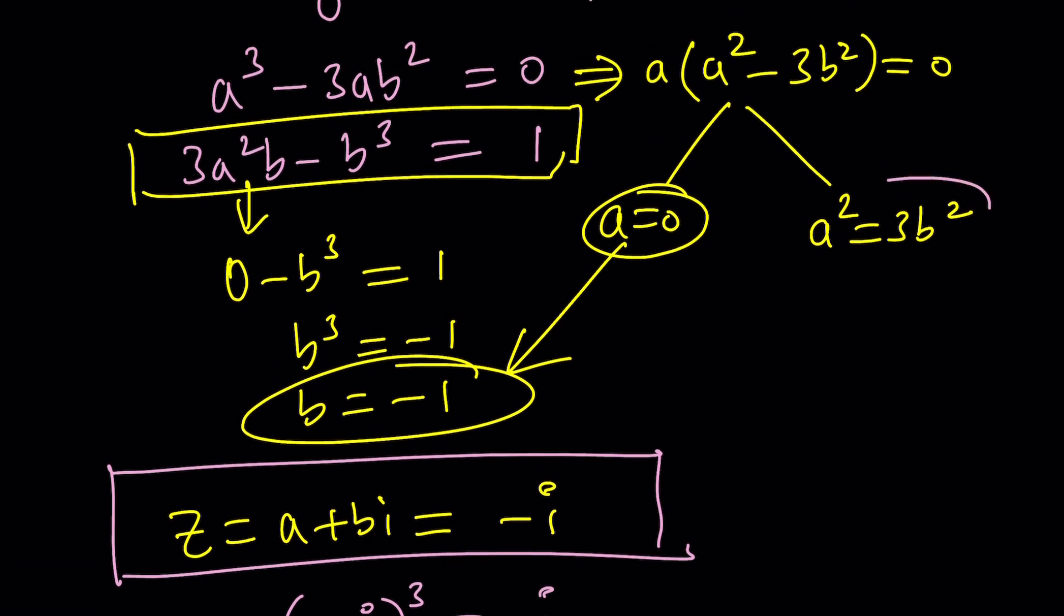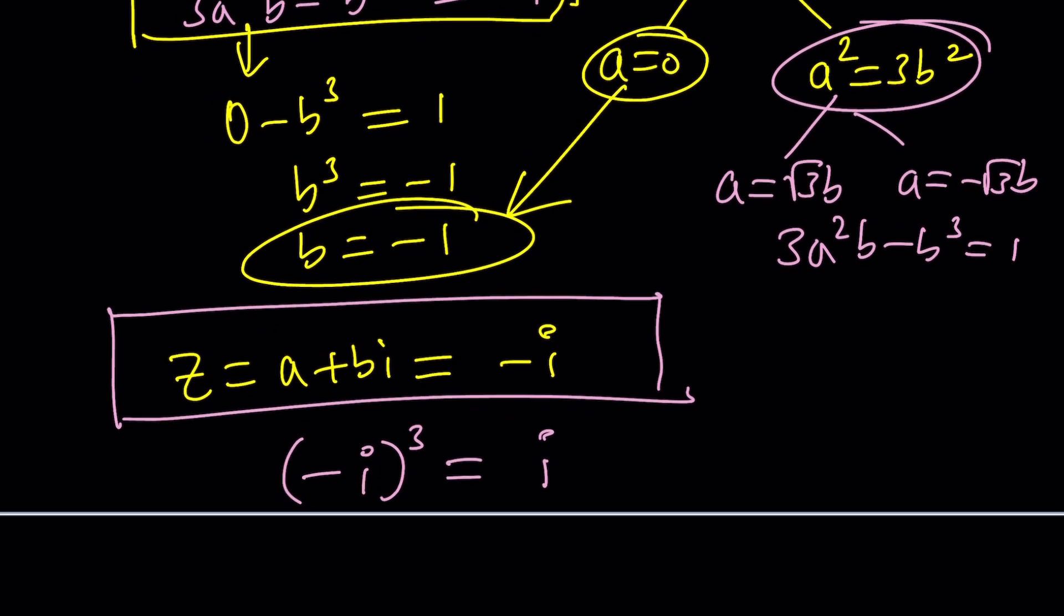What about the other ones that are going to come from here? How do I use that information? We can go ahead and maybe replace b² with a²/3. Or actually, we can split it up again. Write a = √3·b or a = -√3·b. So now, along with that one, let's use this equation and we should get a solution from here.